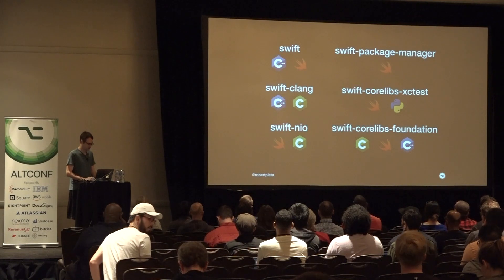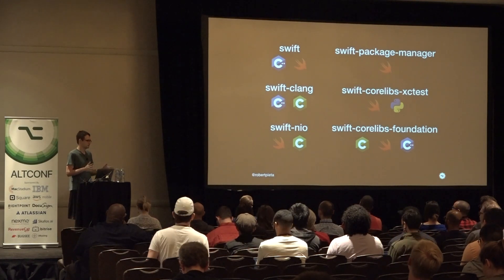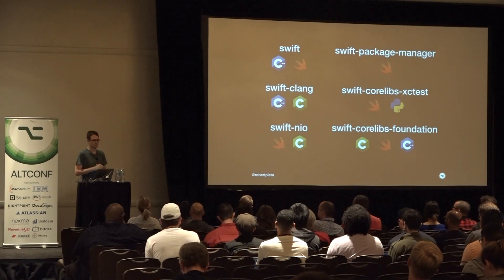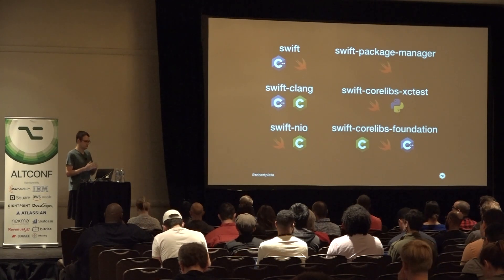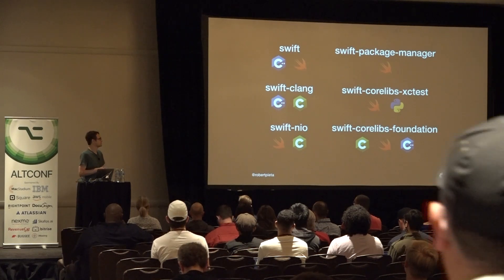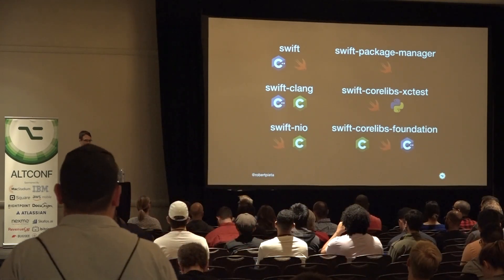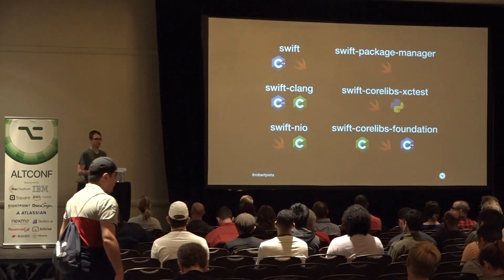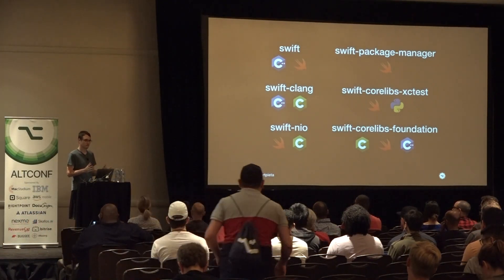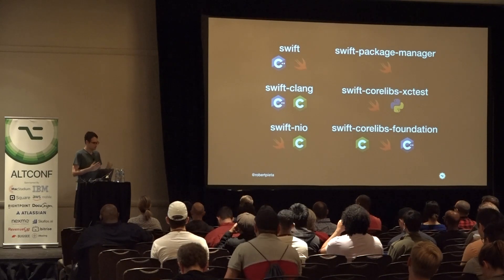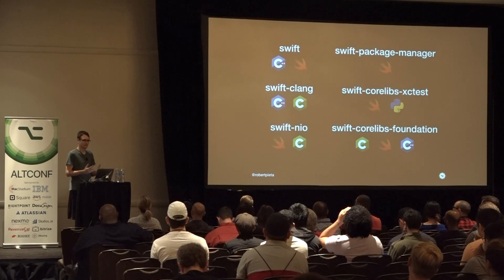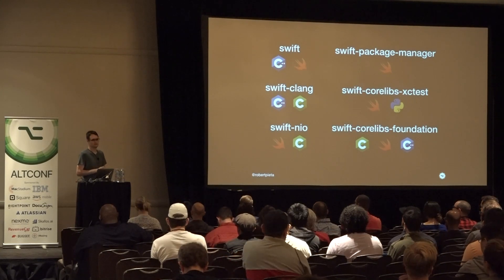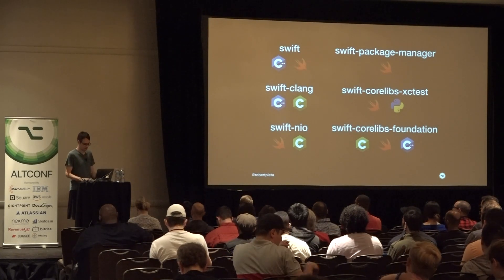One of the interesting things about each of these projects is they have very different build systems and configurations. Swift the language is a pretty complicated build system with developer tools to make it easier to build release and debug versions. But others, like Swift CoreLibs Foundation, are contained almost entirely in Xcode. You can just download the project, open up Xcode, run it, and test completely within Xcode, which makes contributing — especially for the first time — a lot easier. You can focus more on what you want to contribute to instead of learning about the ecosystem as a whole.